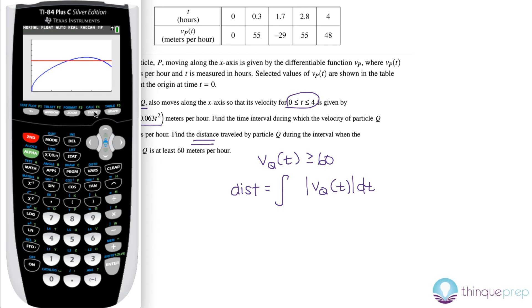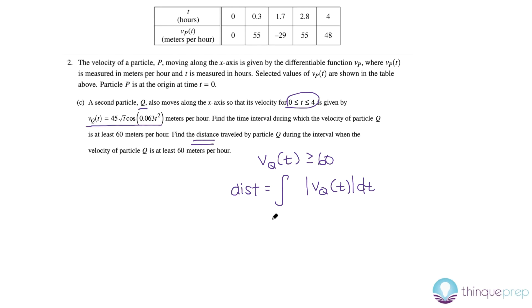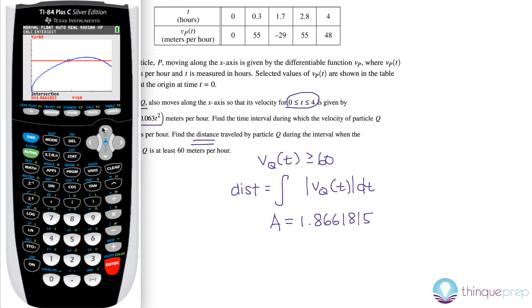So, I'm going to go ahead and calculate the point of intersection. So, I go 2nd calc. Intersect is number 5. So, I'm going to scroll down to number 5. And in order to calculate the point of intersection, all we need to do is we need to scroll over, get close enough to where the two lines are crossing. It doesn't need to be exact. And then we're going to hit enter for first curve. We're going to hit enter for second curve. And then when it asks yes, all you need to do is click enter a third time. And it gives you the full intersection point. So, I get x is equal to that number. So, I'm just going to write that. I'm going to call that a. a is equal to 1.8661815. Again, you don't need to be super accurate. Only three decimal places is enough.